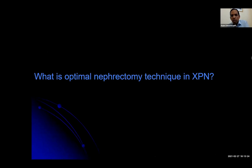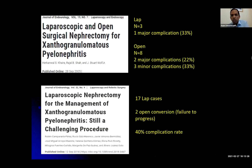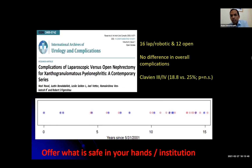The vast majority of XGP cases require nephrectomy. What's the optimal technique — open or minimally invasive? Studies show the major complication rate regardless of technique is quite high, between 33 to 40%. A more recent study comparing laparoscopic, robotic, and open procedures showed no difference in overall complications, with a major Clavien 3 and 4 complication rate of nearly a quarter. Over time surgeons have moved towards minimally invasive approaches, but the message is: offer what is safe in your hands or institution. Just because others do it minimally invasively doesn't mean you have to.